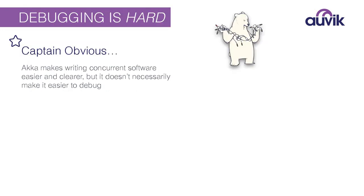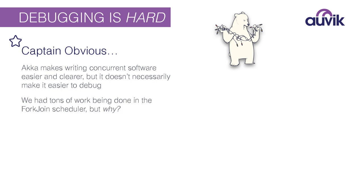Debugging is going to be a more in-depth section. Debugging is hard — if we all wrote perfect software, we'd be fine. ACA does make writing concurrent software easier, but there's nothing to say it makes debugging easier. It helps you reason about your app, which does help debugging, but there are all kinds of interesting problems. We found tons of work being done by the fork-join scheduler — literally taking up about 50% of our time.